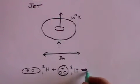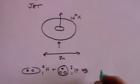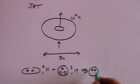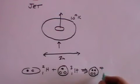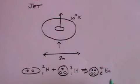They come together to form an alpha particle, or a helium nucleus, which is two protons and two neutrons. And that's represented as 4-2 helium, plus a neutron.